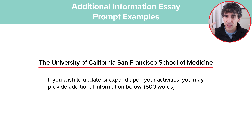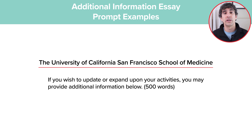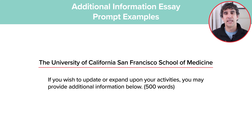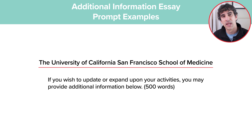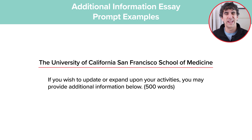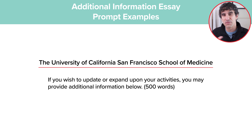You'll want to take some time to think about whether you have any new experiences or accomplishments to share with outcomes that weren't included in your primary application or your other secondary prompts for this school. In addition to those details, we also recommend choosing a few of your most significant activities — like the ones that felt most meaningful to you or the ones most closely related to your goals as a future physician — and providing additional context for them. Identify two or three anecdotes you could tell that illustrate why these experiences were so meaningful to you.